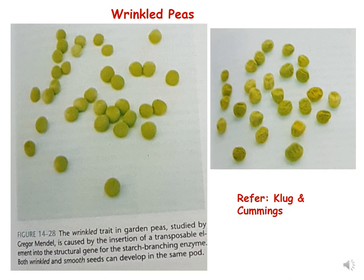This is the last example we will cover for transposons in eukaryotes today. This is not an AC/DS element, but wrinkled peas — as studied by Mendel — are also caused by a transposon. The wrinkled trait in garden peas is caused by insertion of a transposable element into the structural gene for starch branching enzyme. Both wrinkled and smooth seeds can develop in the same pods. I hope these examples are enough for understanding transposons in eukaryotes, and we will meet in Part 3 of the transposons lecture series. Thank you, students.